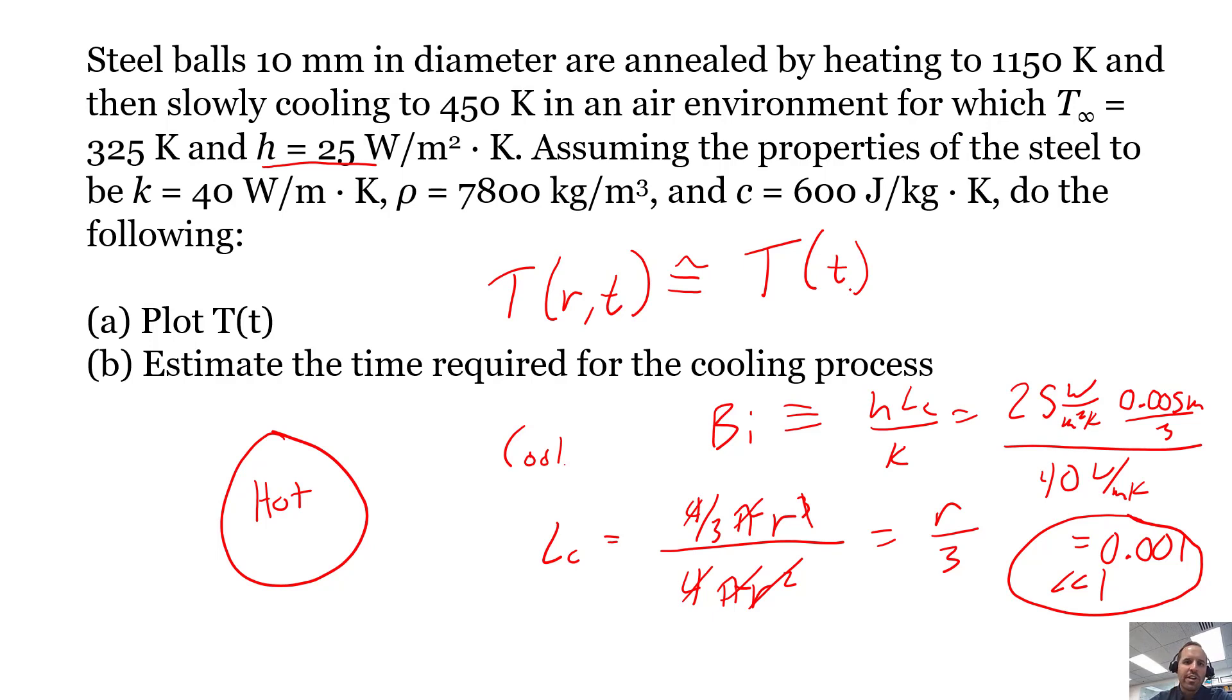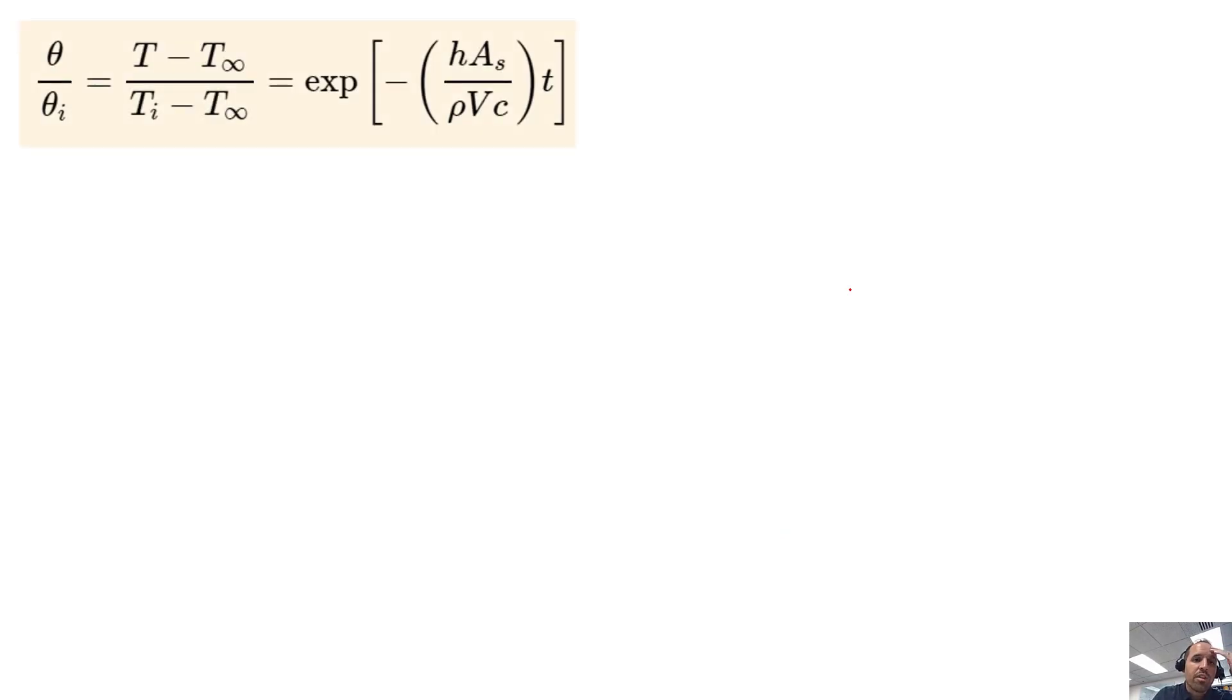In our last video lecture we went through and derived this exact situation when you have a heating or cooling process in a solid that is driven only by convection. We solved that convection only case and ended up with this equation. We defined a new variable for temperature difference called theta, but you can easily insert the definition of theta into our equation. Here we have the initial temperature, the ambient temperature, all of our thermal properties and some of our geometric properties.